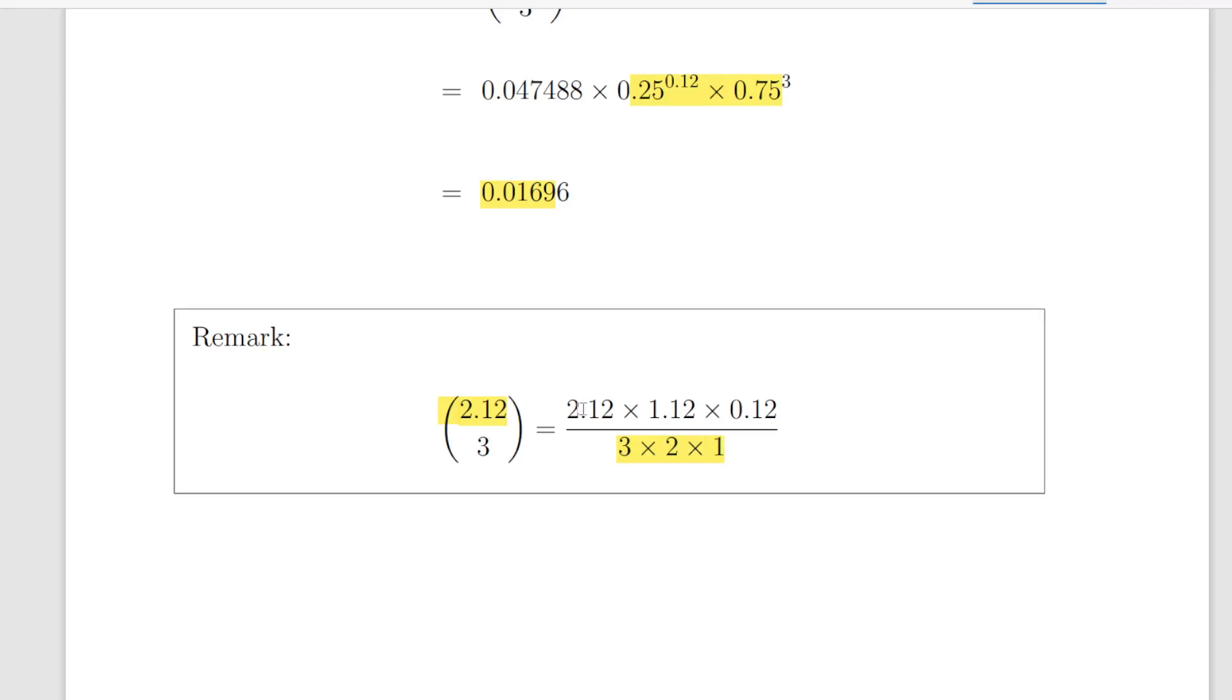And what we do above is we start at the first number there, 2.12, multiply it by that number minus 1, 1.12, and then multiply it by that number minus 1 again, 0.12. And there should be an equal number of numbers, coefficients, above and below the line. It's just a sort of way of remembering how to do it.